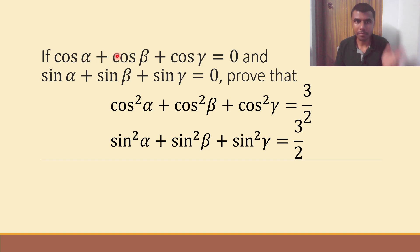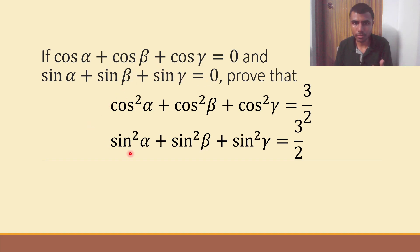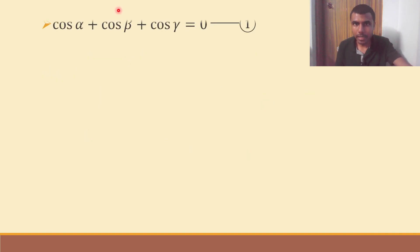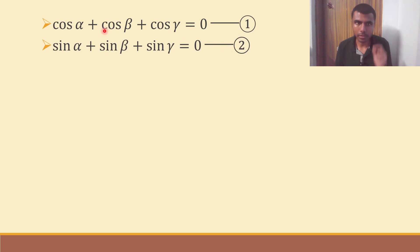Here we are given that cos α plus cos β plus cos γ equals 0, and sin α plus sin β plus sin γ equals 0. Now using these two conditions, we have to show what they're asking. I'm going to make it easy for you, so please stay with me. First, write down the given two conditions and take them as 1 and 2.